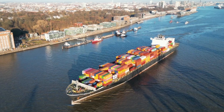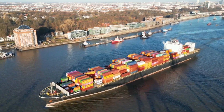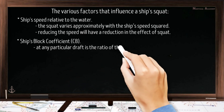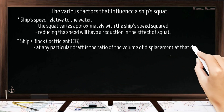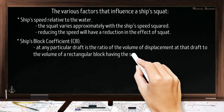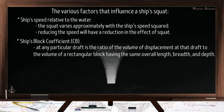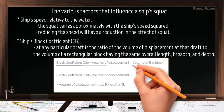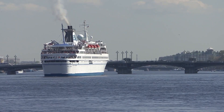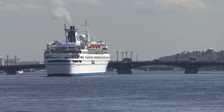The next factor that governs a ship's squat is the block coefficient. The block coefficient of the ship at any particular draft is the ratio of the volume of displacement at that draft to the volume of a rectangular block having the same overall length, breadth, and depth. We can calculate the block coefficient using this formula, but on board the ship we can extract the value of the block coefficient from the ship's stability manual.